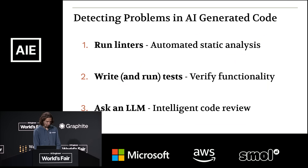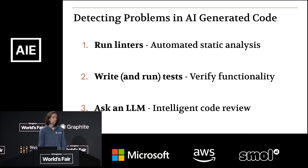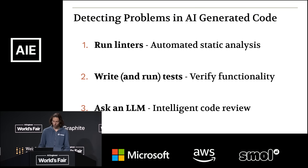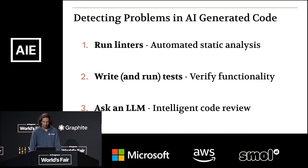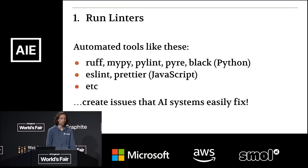No matter how many things you do to prevent the AI system from making mistakes in the first place, it's going to make some. There are many things we can do to detect those problems and prevent them from getting into production. We'll go through three: first, running linters; second, writing and running tests; third, asking an LLM.